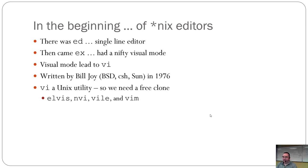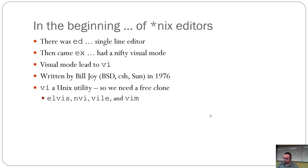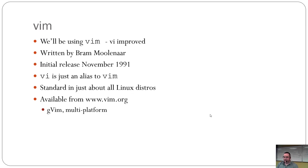They came up with a bunch of clones. There was one called Elvis — it's dead. There was NVI, one called Vile, and one called Vim. Right now, the only one that's still around really is Vim. None of the others really had anything to offer. In this course, we use Vim.